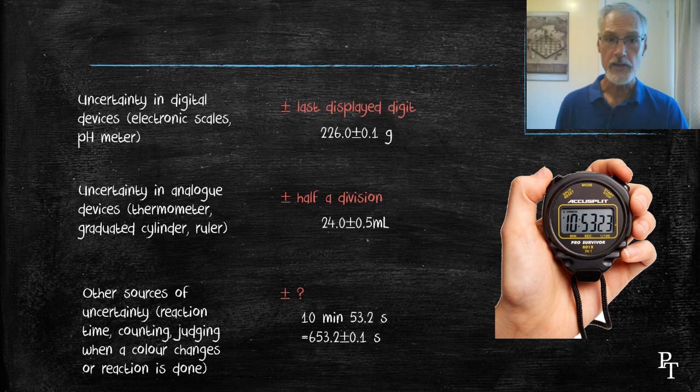But I also may choose to make that error larger. Say I was judging when a reaction was finished by when the time's bubbles stopped appearing. I might not be that exact.